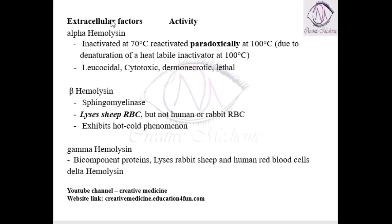In virulence, we have some extracellular factors for Staphylococcus aureus. First, we have alpha hemolysin. This alpha hemolysin has paradoxical activity — it is inactivated at 70 degrees Celsius and becomes reactivated at 100 degrees Celsius. This inactivation and reactivation is mainly due to a heat labile inactivator at 100 degrees Celsius.